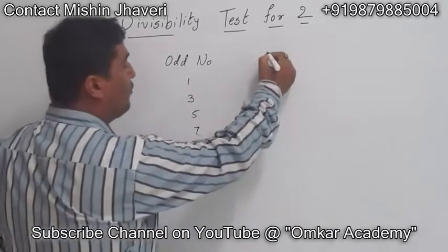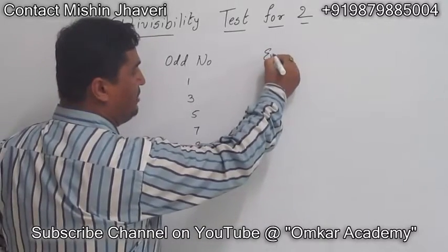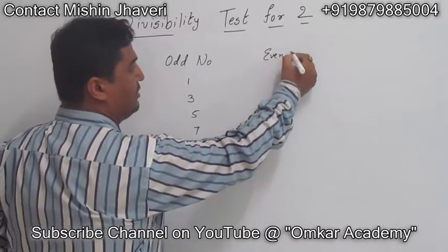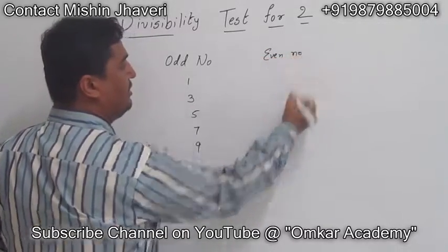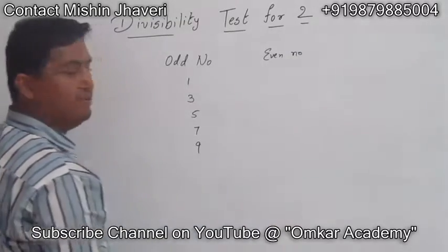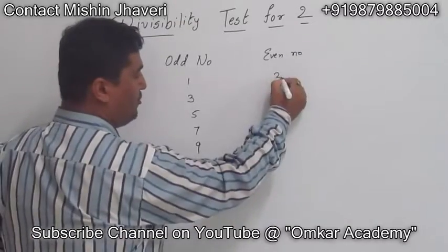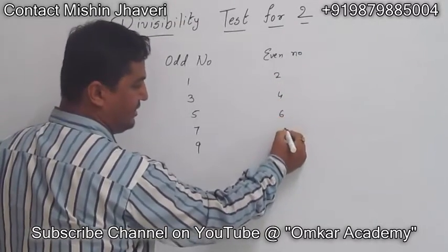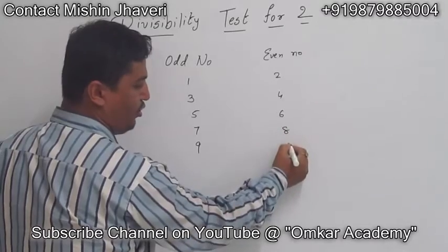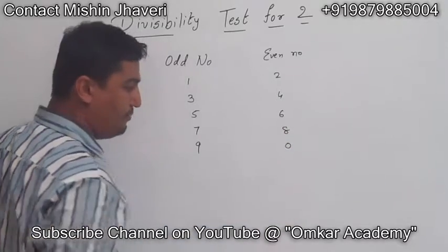What are even numbers? Numbers ending with 2, 4, 6, 8 or 0 are even numbers.